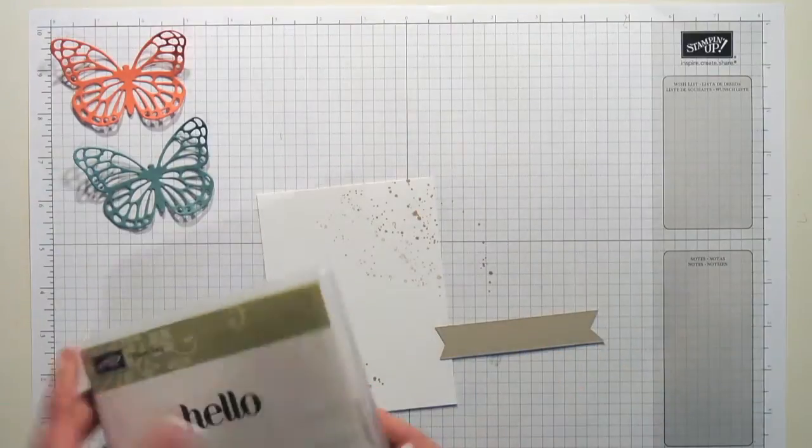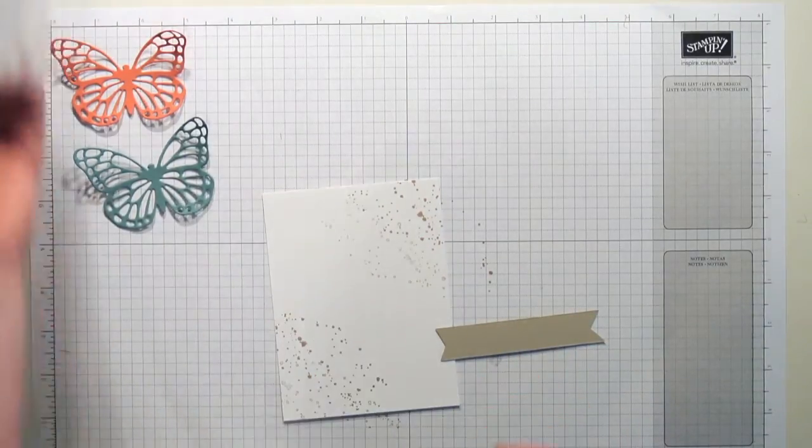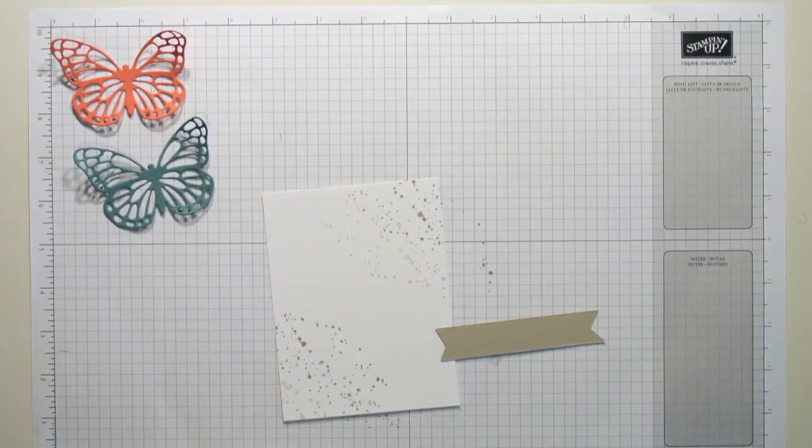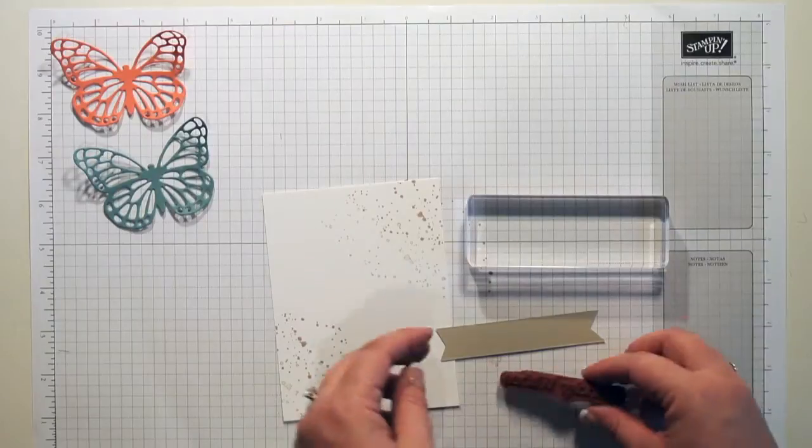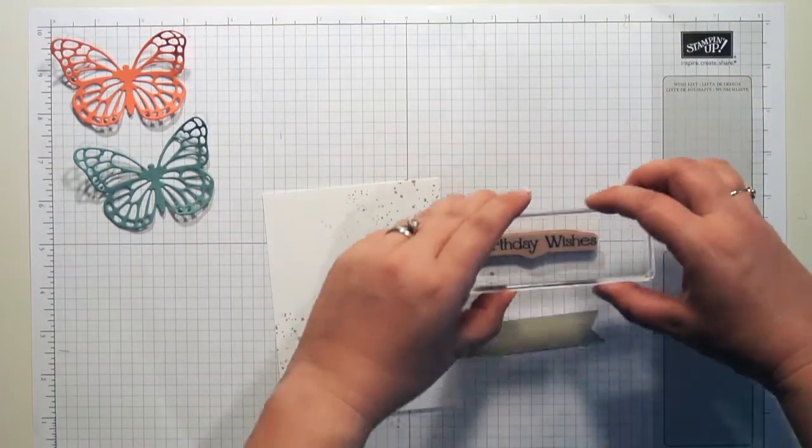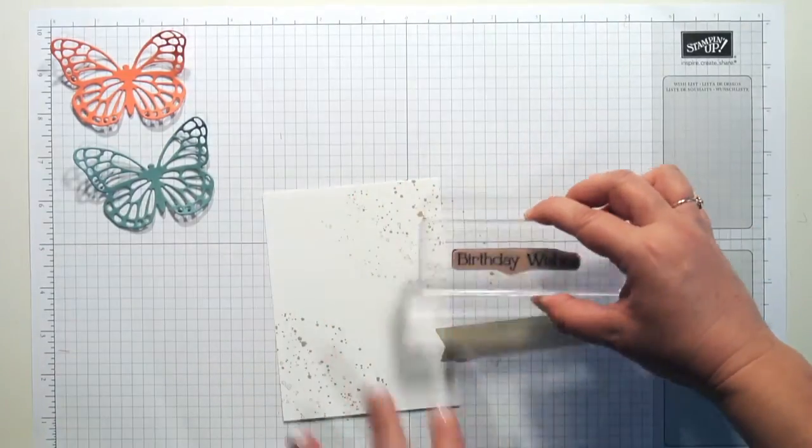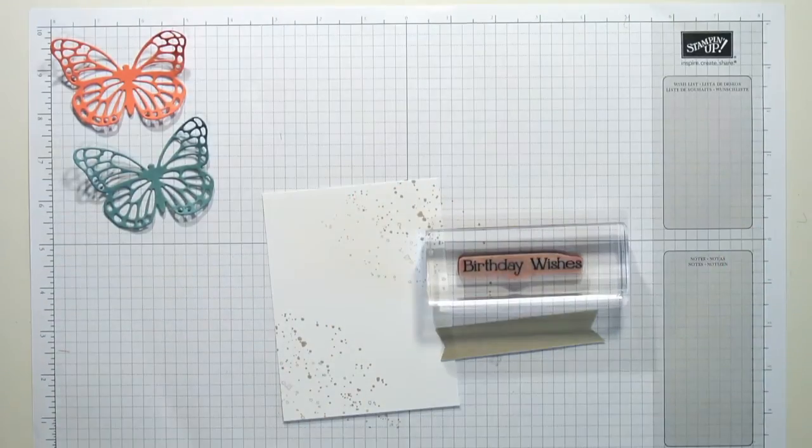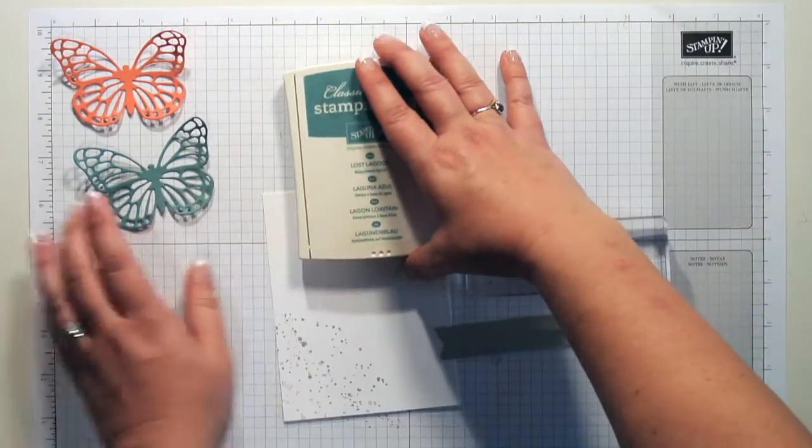Okay, then I want to stamp my banner and I mentioned I'm using Birthday Wishes and my other clear block. This is clear block H. And did you know that Stampin' Up has nine different size clear blocks? Really cool.